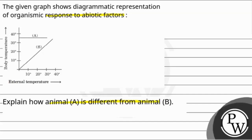This graph has the external temperature on the X axis and body temperature on the Y axis. For animal A, the body temperature is constant whereas for animal B, their body temperature is increasing with the external temperature.